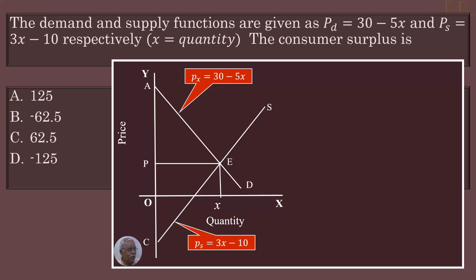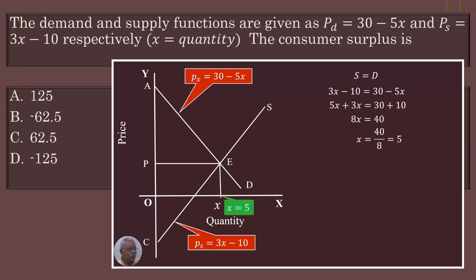This question involves demand and supply functions to find consumer surplus. Supply function: 3x minus 10. Demand function: 30 minus 5x. Setting them equal for equilibrium: 3x minus 10 equals 30 minus 5x, so 8x equals 40, therefore x equals 5. Equilibrium quantity is 5 units.